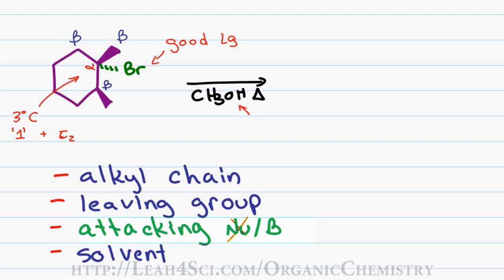Therefore it cannot kick out a leaving group or participate in a 2-type reaction. Instead, it has to wait for the leaving group to leave by itself forming a carbocation, and then it can swoop in and attack. Since methanol is not strong enough to attack directly, we can only have a 1-type reaction and this rules out E2.